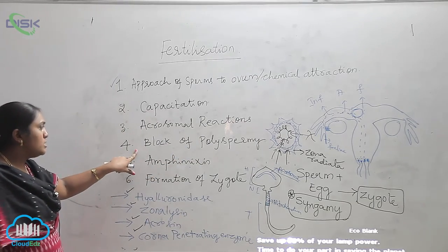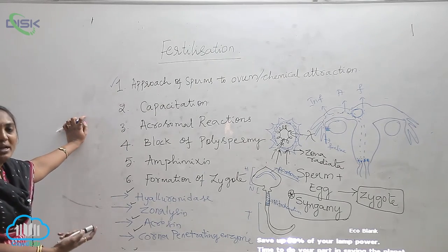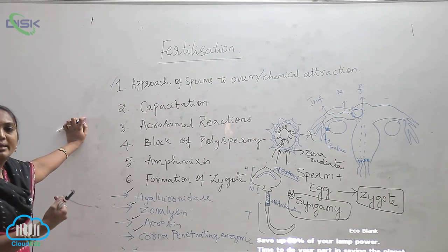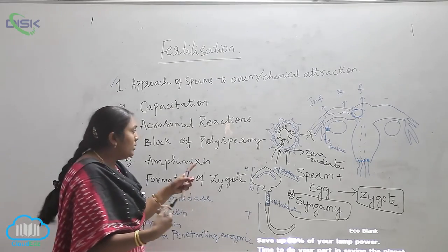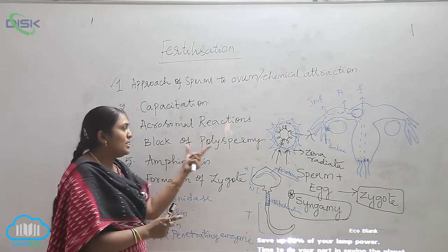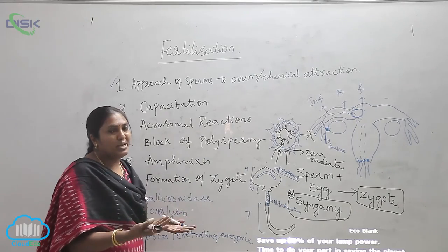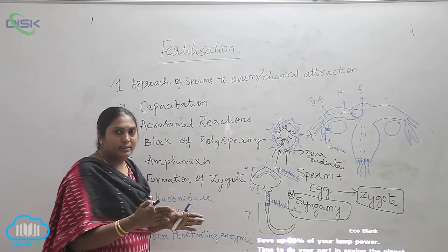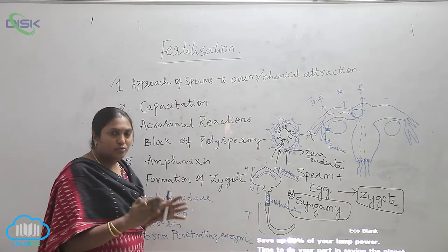The next step is block of polyspermy. As just explained, all sperms cannot penetrate at the same time — only one sperm will enter. This is called the block of polyspermy. 'Poly' means many, so many sperms cannot enter; only one will go.